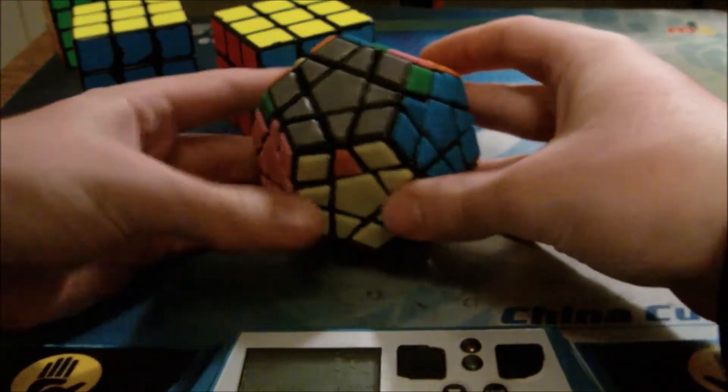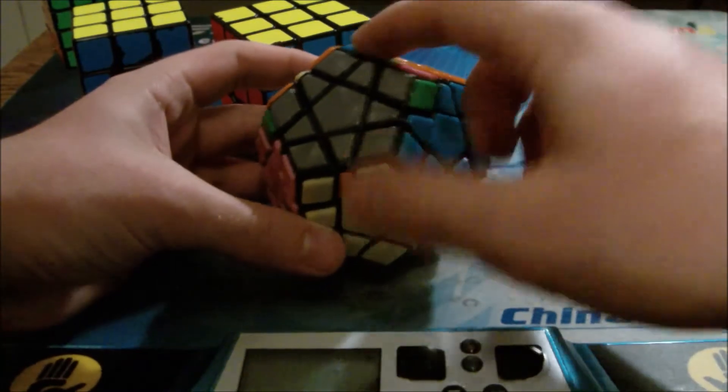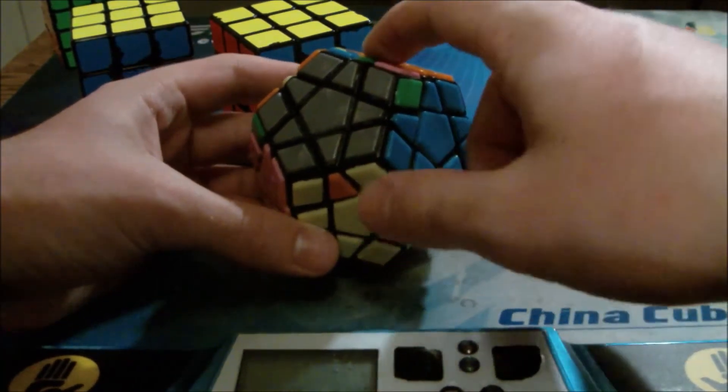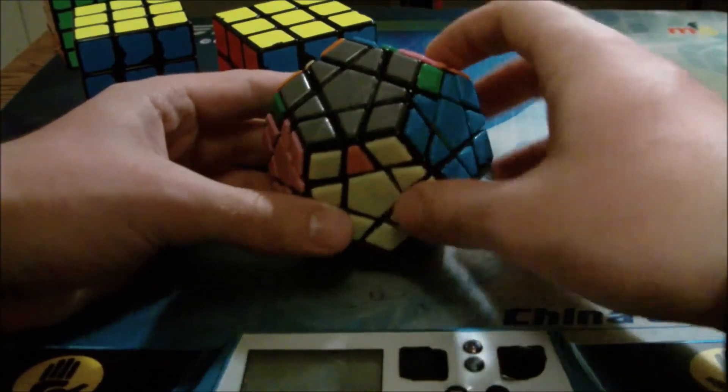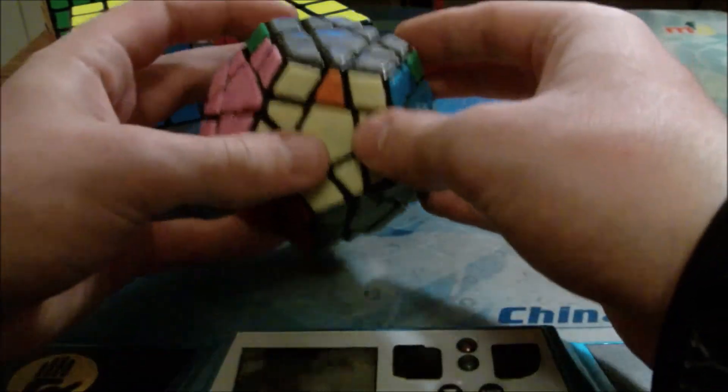And then, the other one, if the edge is going to the other position, the back right, then I just do a mirrored version of it.